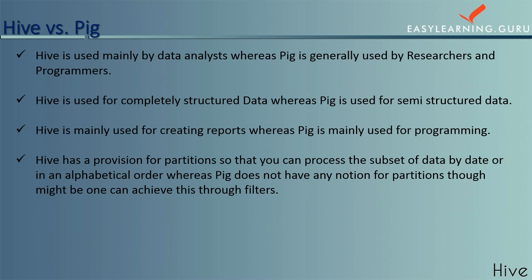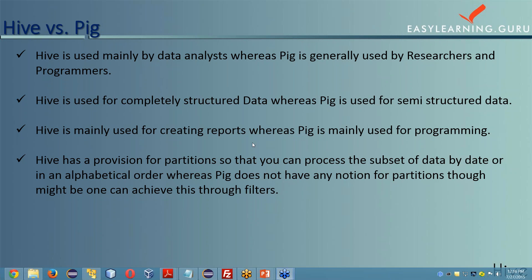Hive has a provision for partitioning, which can help process a subset of data by date or alphabetical order. Pig does not have any notion of partitions — this may be achieved through filters in Pig. This is the key difference between Hive and Pig.